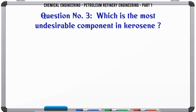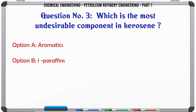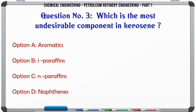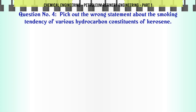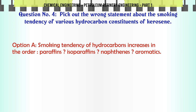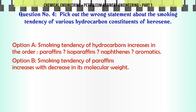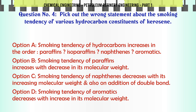Which is the most undesirable component in kerosene? A. Aromatics, B. Paraffins, C. Isoparaffins, D. Naphthenes. The correct answer is Aromatics.